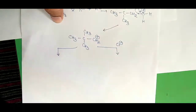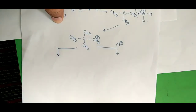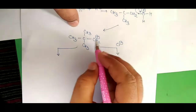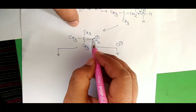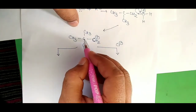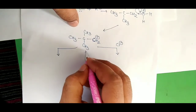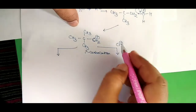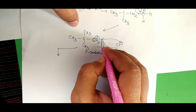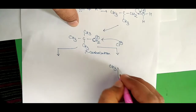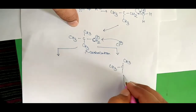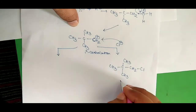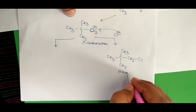Now there are two possibilities. One possibility is that the Cl⁻ ion — which we received from HCl — can attack this carbocation directly. This carbon carries a positive charge and is attached to only one other carbon atom, so this carbocation is called a primary carbocation. If Cl⁻ attacks here, we get CH3, CH3, CH3, CH2, Cl — this is the minor product.